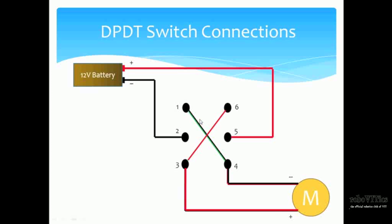Now when you press the switch backwards, pins 5 and 4 and 2 and 3 get shorted and the polarity of the motor reverses and the motor rotates in clockwise direction. This is how DPDT switch connection is made.